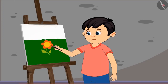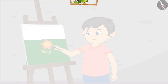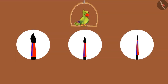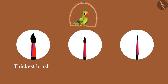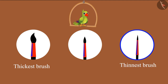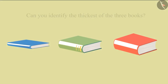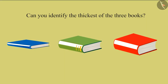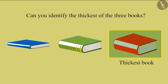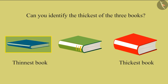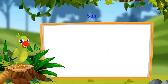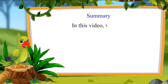Chotto finishes his painting quickly. So children, did you see that? Chotto used the thickest brush to paint the green field and the thinnest brush to paint the plant. Now, children, can you tell me which of these three books is the thickest book of all? This is the thickest book and this is the thinnest book.